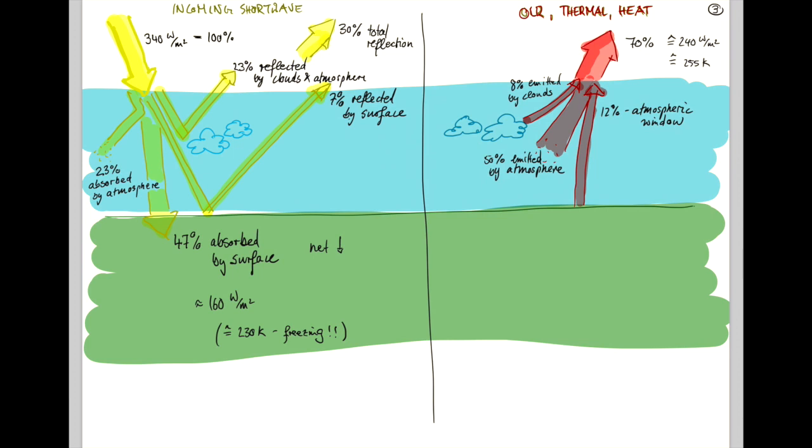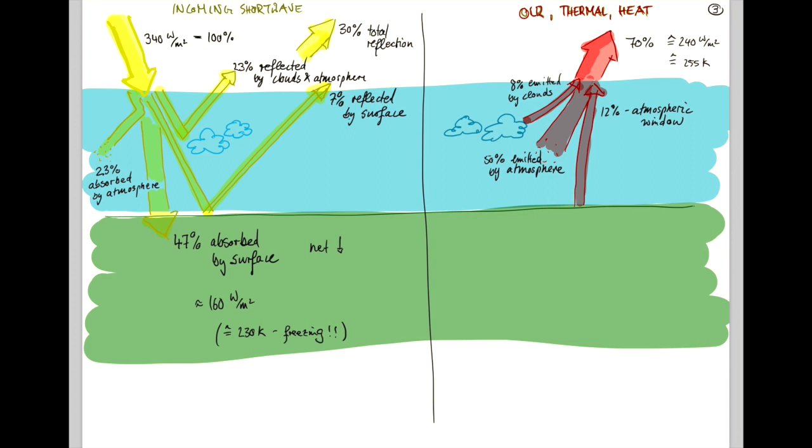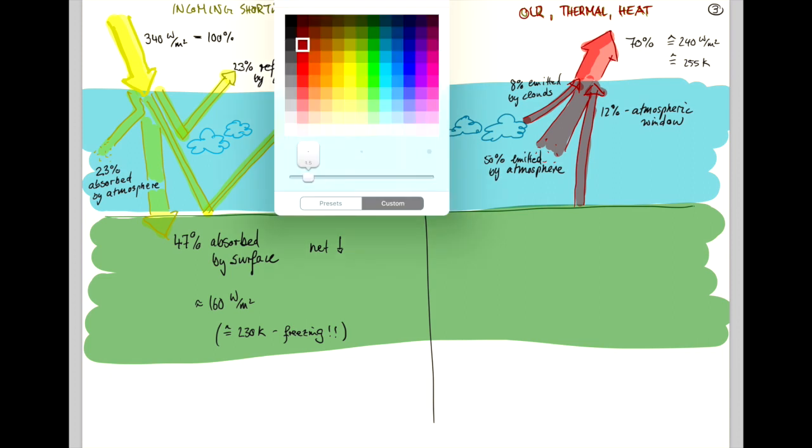Now, where does the atmosphere get its energy from? There are several processes. One is convection, which provides a fairly small amount, namely 5%.